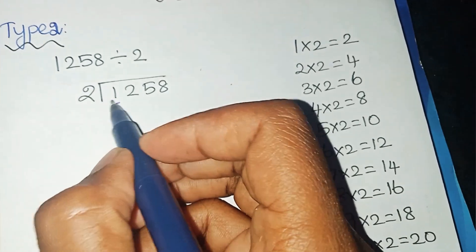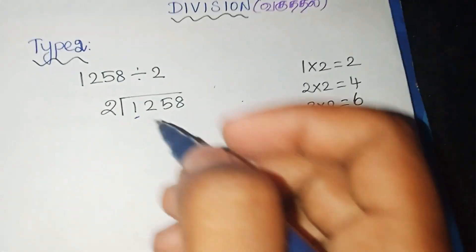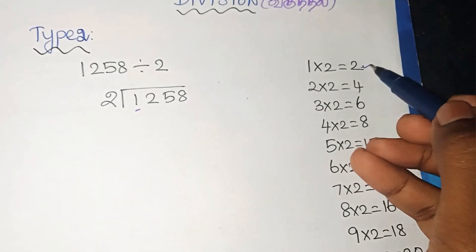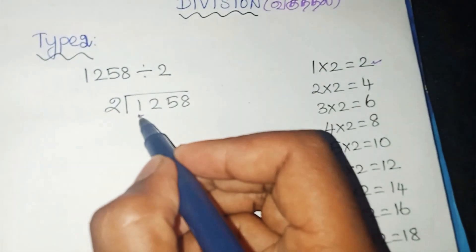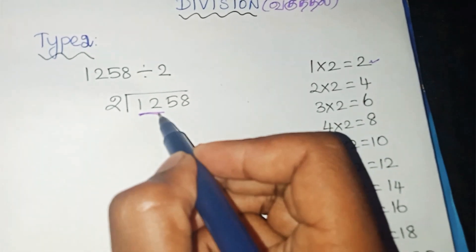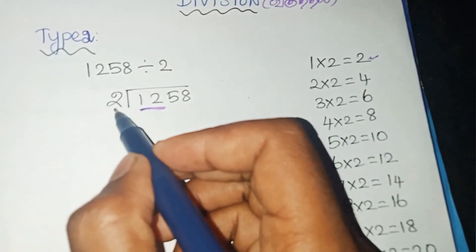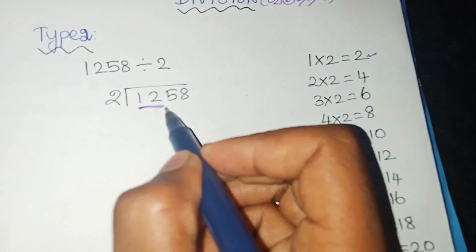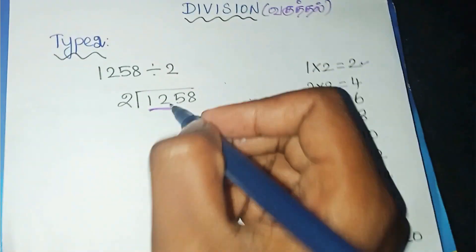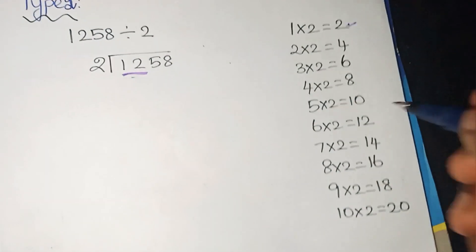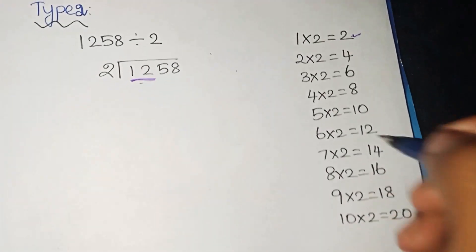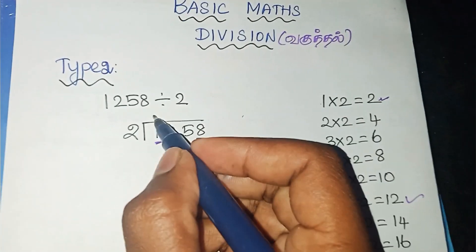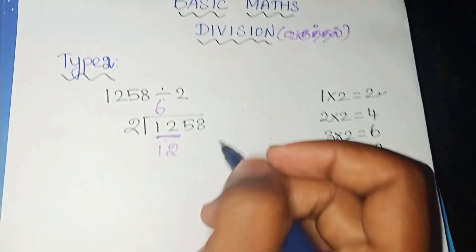First, 1 is smaller than 2. So, 1 does not appear in the 2nd table. So you should take the 2nd digit also. The combined number is 12. You should check the 2nd table — how many 2's are 12? 6 into 2 is 12. So, 2 times 6 gives you 12.